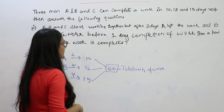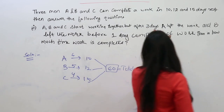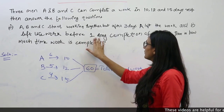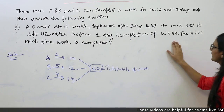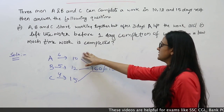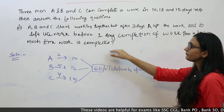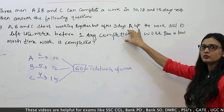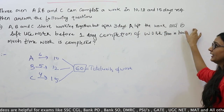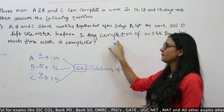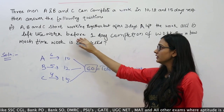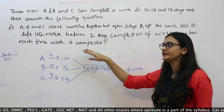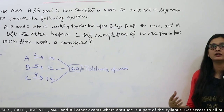Next question: A, B and C start working together, but after 3 days A left the work, and B left the work before one day completion of the work. Then in how much time is the work completed? A और B ने साथ में काम करना शुरू किया, लेकिन काम शुरू होने के 3 दिन बाद A छोड़कर चला गया. और B काम पूरा होने से एक दिन पहले काम छोड़कर चला गया. अब हमें ये बताना है कि काम कितने दिन में पूरा हुआ.